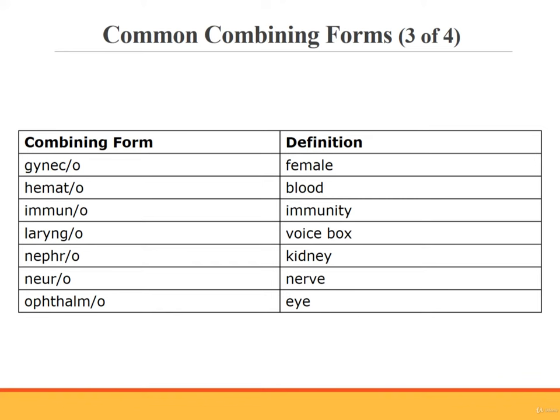Additional common combining forms include: gyneco, hemato, immuno, laryngo (or laryngeo), nephro, neuro, and ophthalmo.